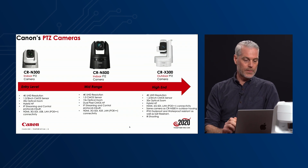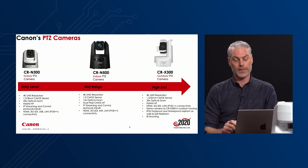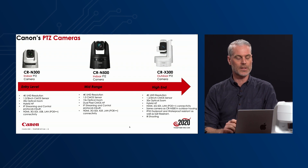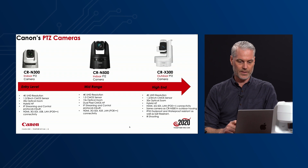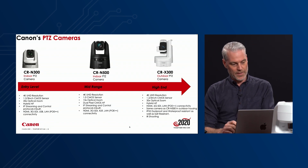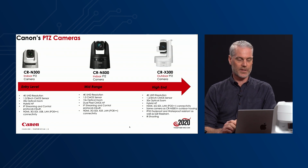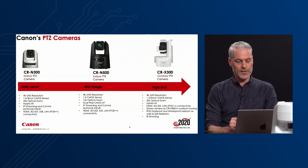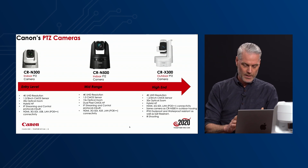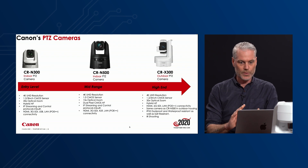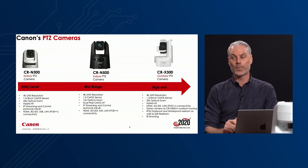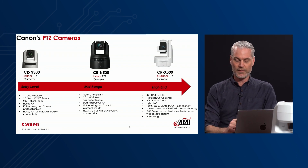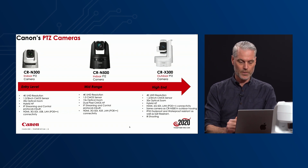We have four cameras in our range right now, but the three of main interest are the CR-N300 and CR-N500, launched in March last year, and the CR-X300, launched in December last year. The CR-N300 and CR-X300 are essentially the same camera unit inside, but the CR-X300 is designed for outdoor use — it's weatherproof, IP-classified, has a wiper and washing fluid to keep the glass clean. That camera also features IR filming, meaning you can remove the IR cut filter to shoot in very dark environments — useful for reality shows or nature photography.